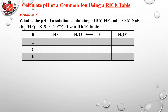In this problem the molarity isn't equal: 0.1 M HF and 0.3 M NaF. Since NaF fully dissociates, you get 0.3 M F⁻. Filling in the RICE table: HF = 0.1, F⁻ = 0.3, H₃O⁺ = 0 initially. Change line: −x for HF, +x for F⁻, +x for H₃O⁺. Equilibrium: 0.1 − x, 0.3 + x, x.